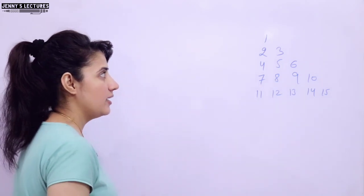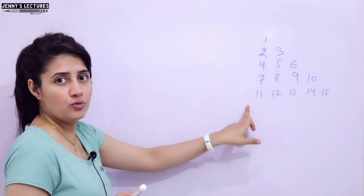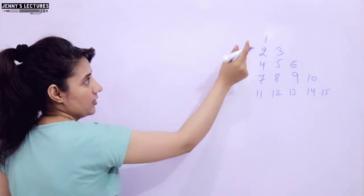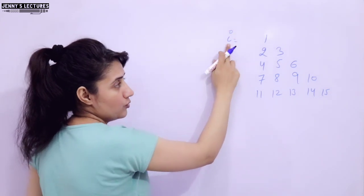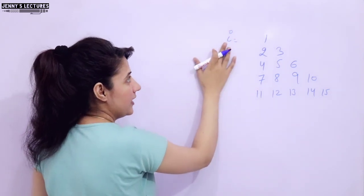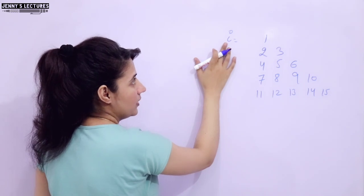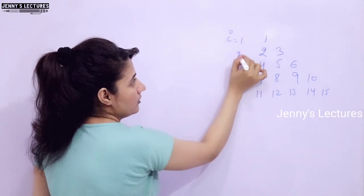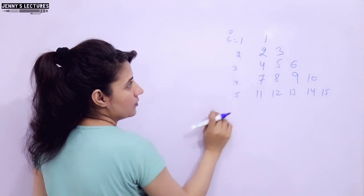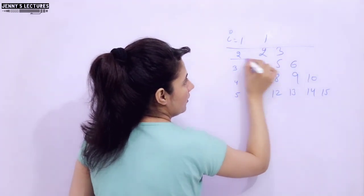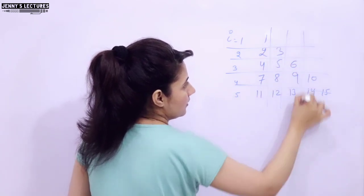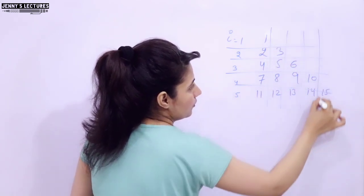The first thing is to identify the number of rows and number of columns. How many rows do you want to print here? 5. The outer loop, generally we take I as the variable name. I is 1, then 2, then 3, then 4, then 5. These are for the number of rows, and these are the number of columns.